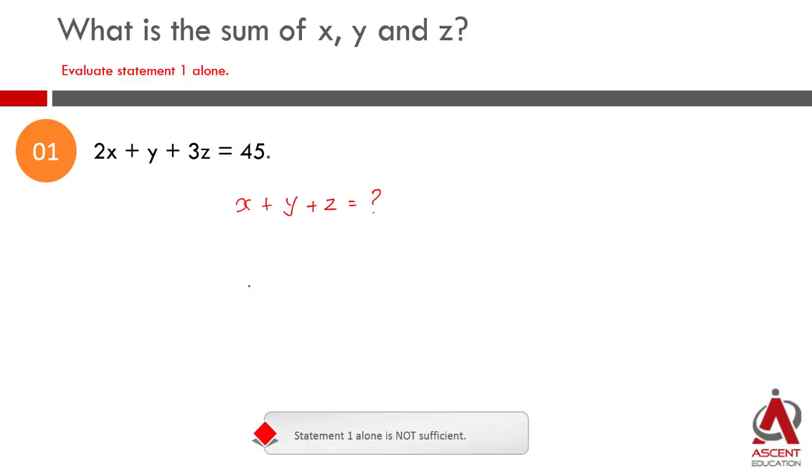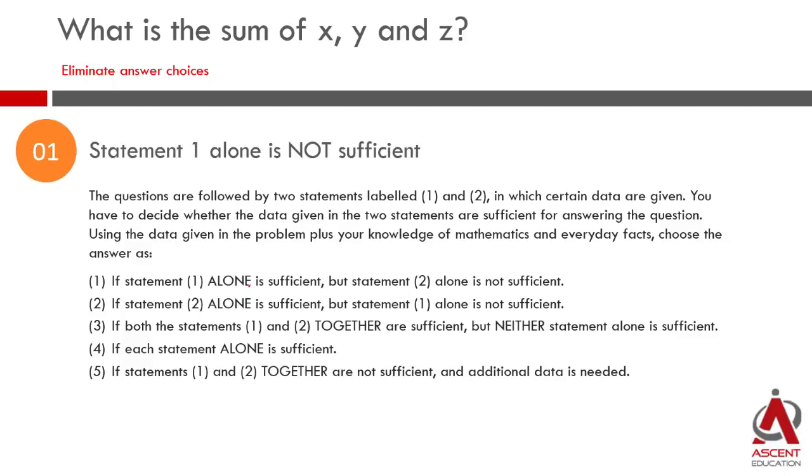So statement one alone is not sufficient. If statement one is not sufficient, the two answer choices which we can eliminate are 1 and 4. Statement one alone is not sufficient, so answer choice 1 goes away. Each statement is individually not sufficient, so choice 4 also goes away. What are we left with? Our choices narrow down to 2, 3 or 5.